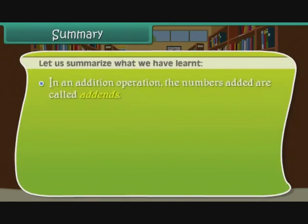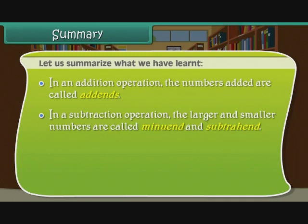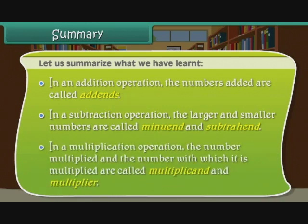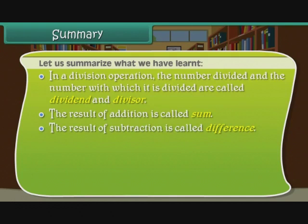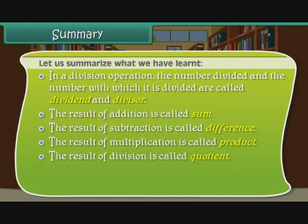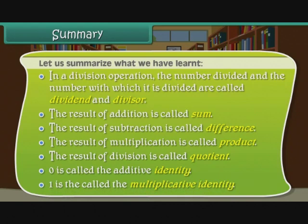Summary: In an addition operation, the numbers added are called addends. In a subtraction operation, the larger and smaller numbers are called minuend and subtrahend. In a multiplication operation, the numbers multiplied are called multiplicand and multiplier. In a division operation, the numbers are called dividend and divisor. The result of addition is called sum. The result of subtraction is called difference. The result of multiplication is called product. The result of division is called quotient. Zero is called the additive identity. One is called the multiplicative identity.